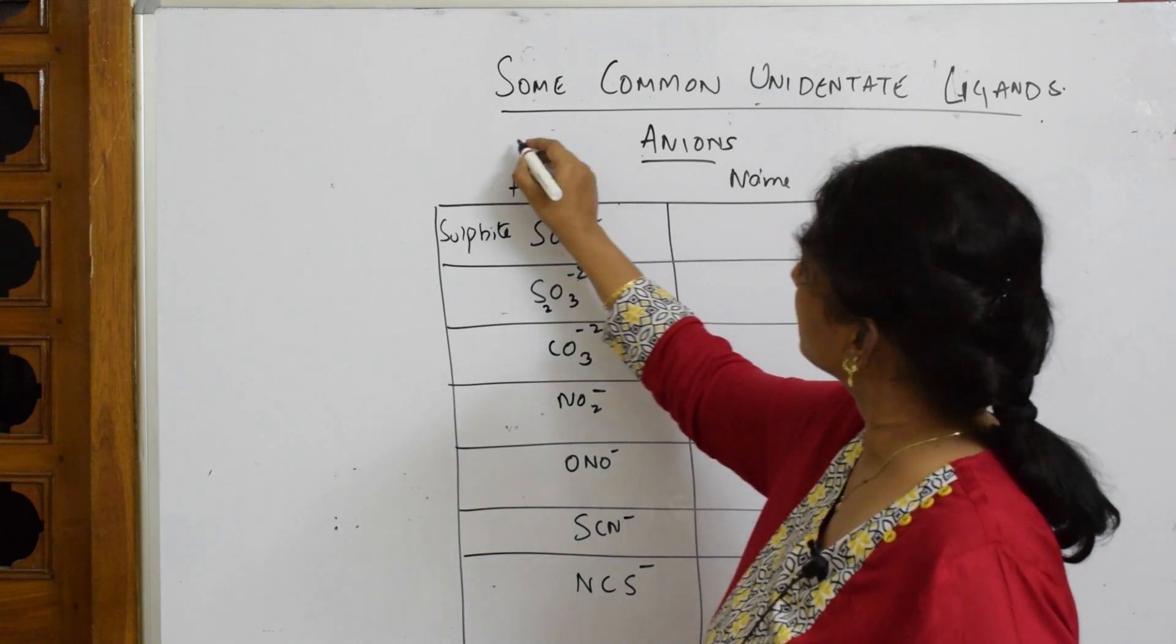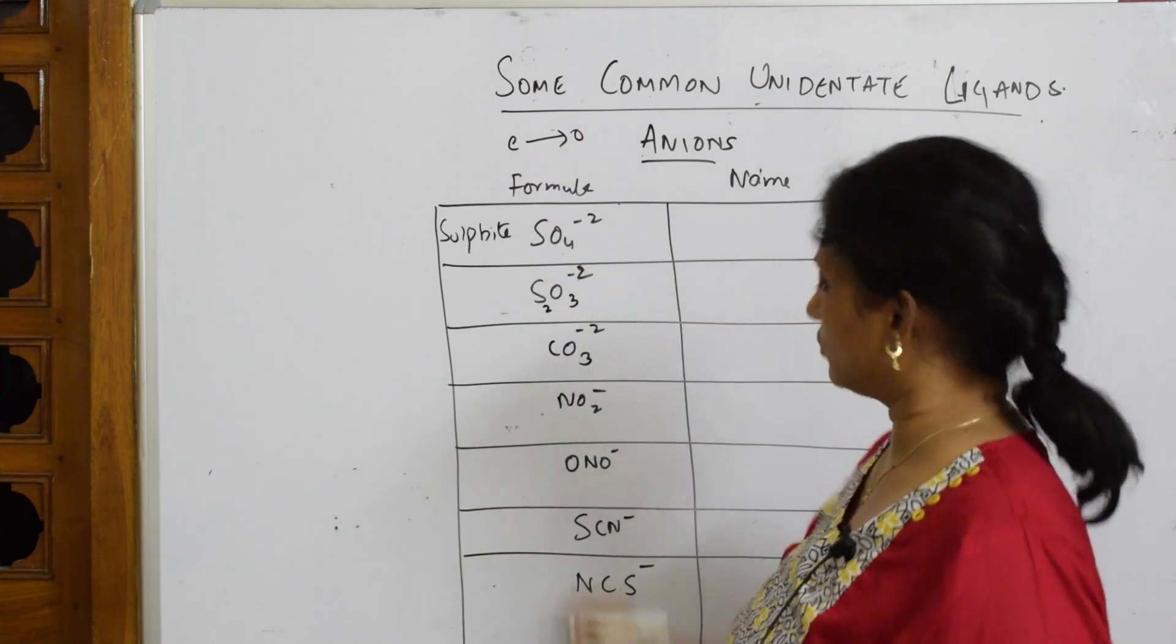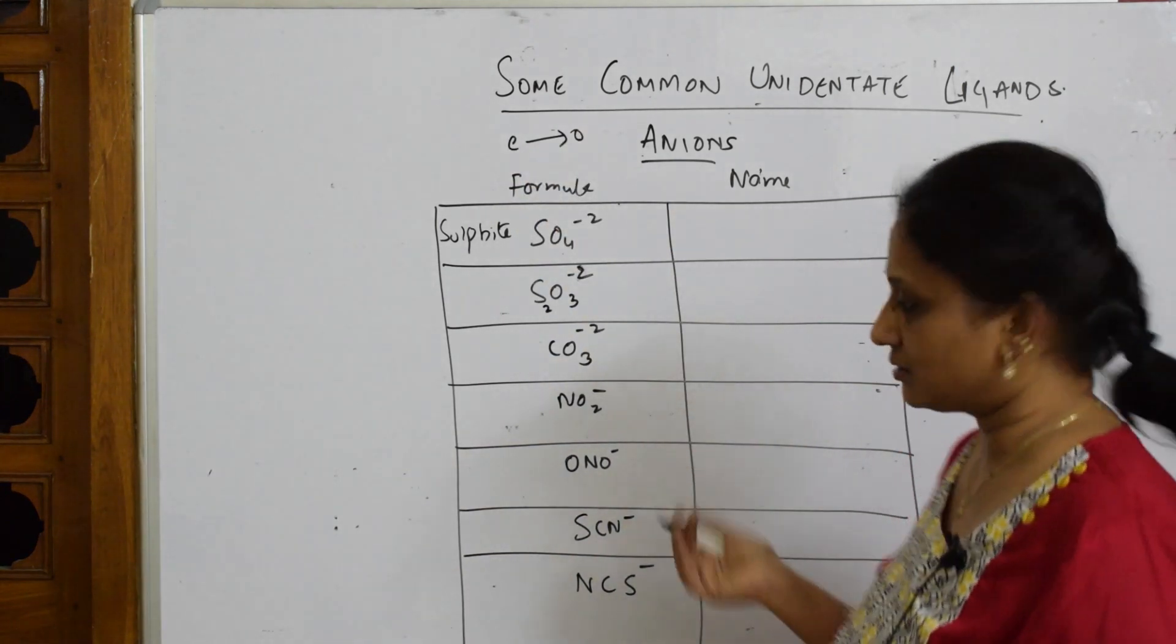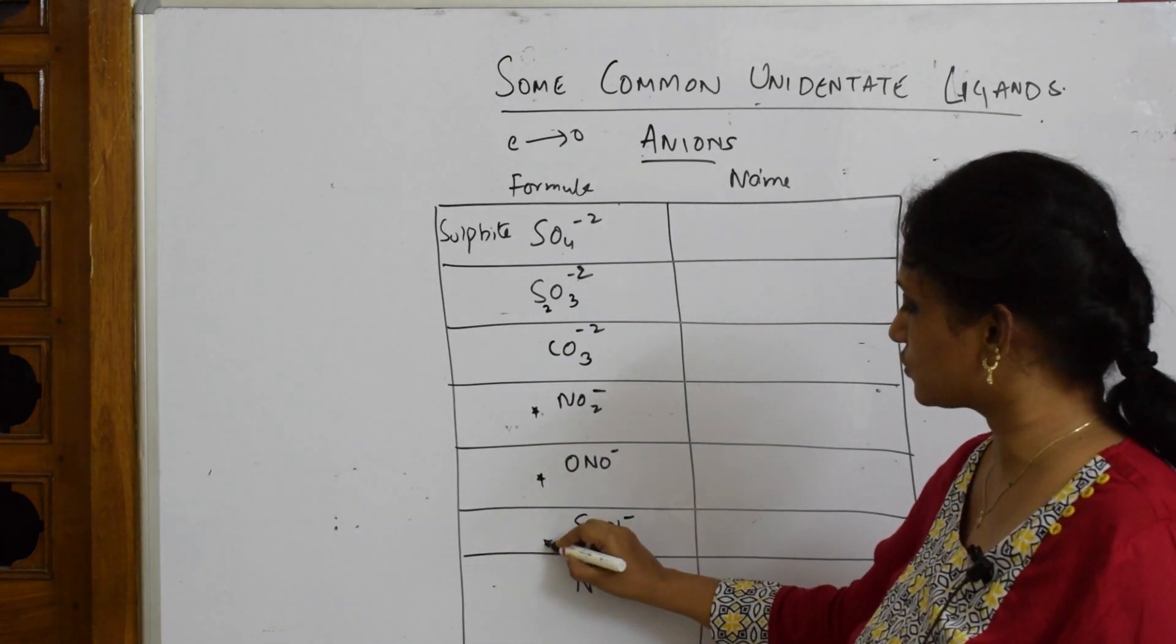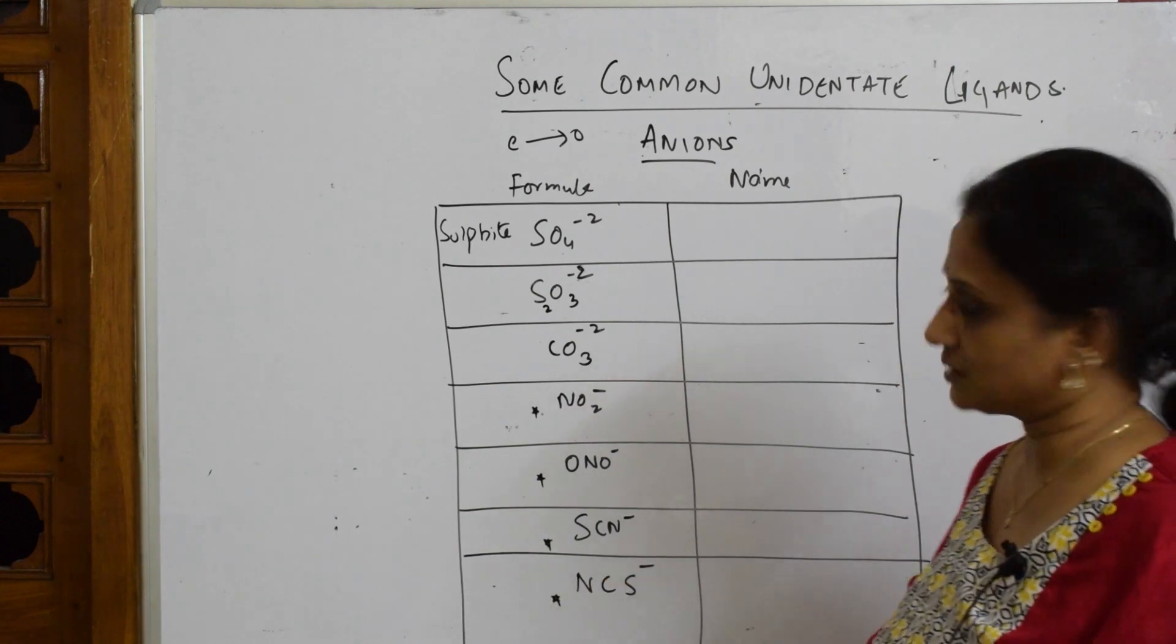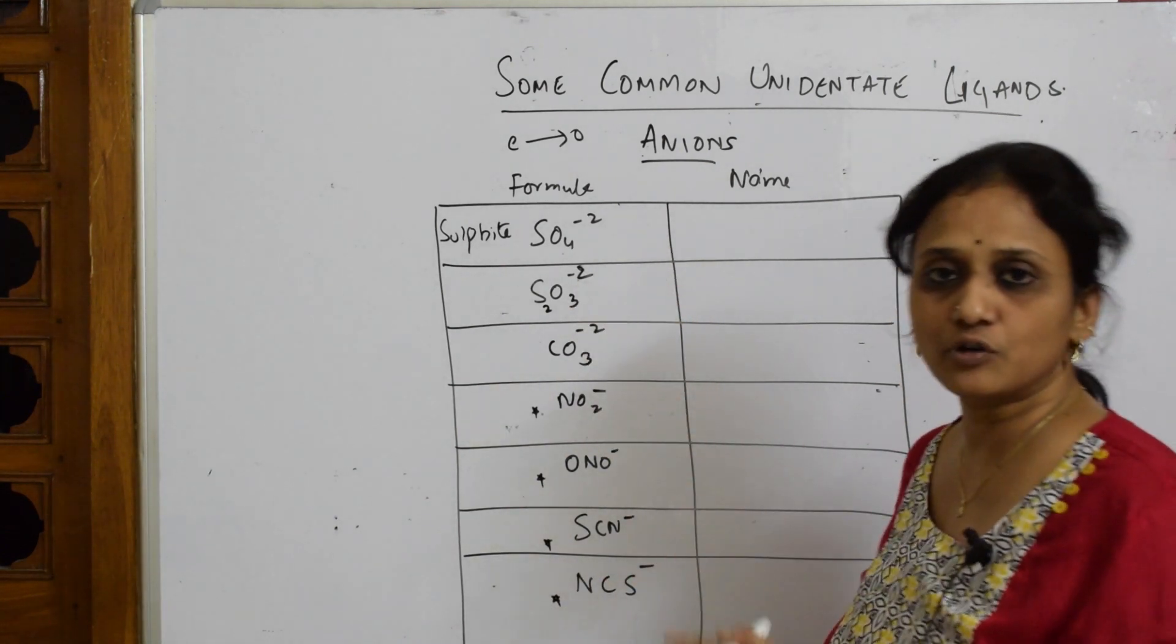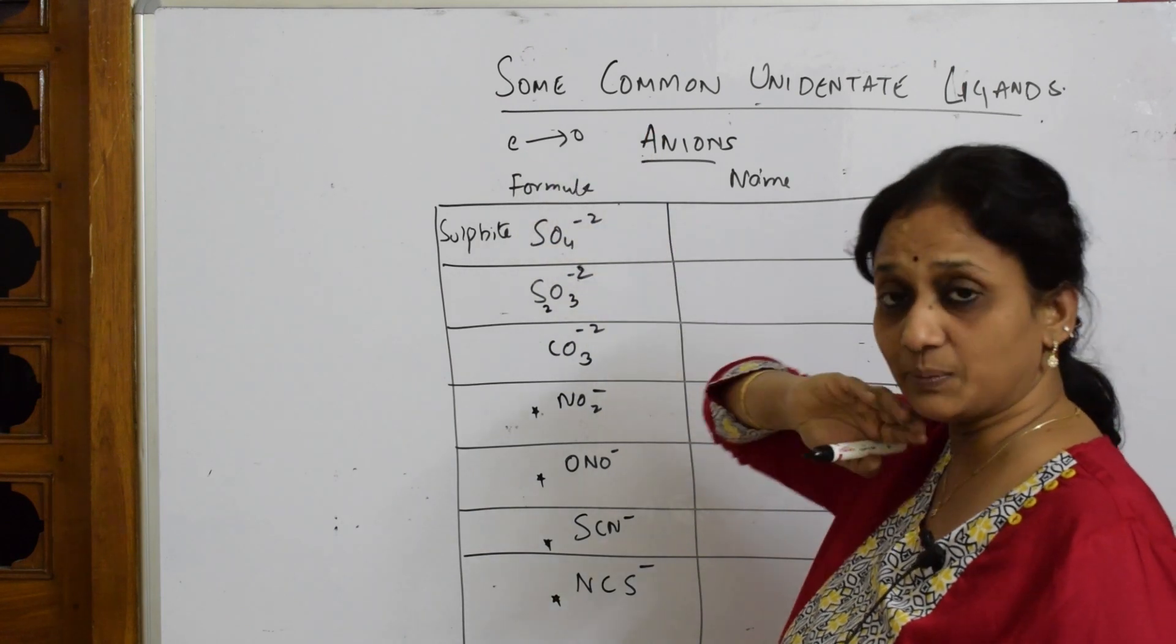I'm going to write here: 'e' is replaced by 'o'. But there are certain exceptions here. Let us start. For the first three, you can follow the same thing - 'e' will be replaced by 'o'. Take out this 'e' and write 'sulfato'.